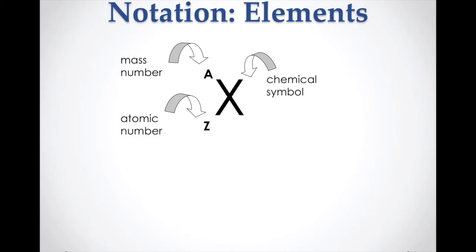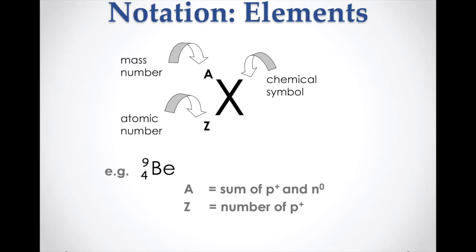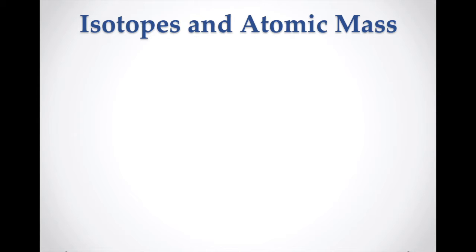Whenever we write down an element we have three parts to it: there's the atomic number, which is basically the number of protons; there's the mass number, which is the sum of the protons and neutrons; and then there's the chemical symbol that is unique for each element. As an example, beryllium has 'Be' as its chemical symbol. Beryllium has four protons and five neutrons, which is why its mass number is nine — four plus five is nine.